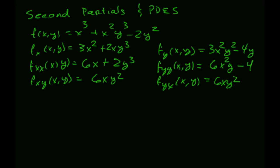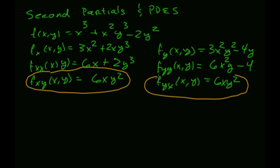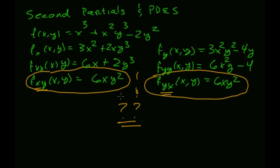What you should be noticing is that the two mixed partials came out identical — the f_xy and the f_yx partials came out identical. So the question is: when does that happen? Does it happen all the time, or is there something special about this function? The answer is it happens a lot of the time, yet not all the time.